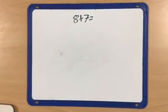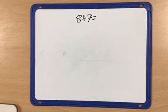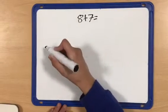In this video we will show you how to use the bridging strategy. In this example we have 8 add 7. I'm going to draw a number line.